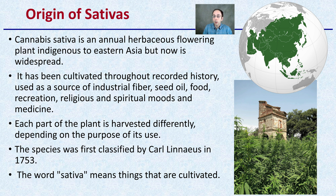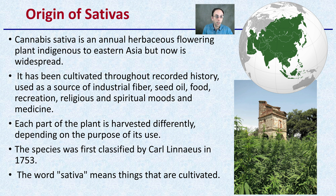Each part of the plant is harvested differently depending on the purpose of use, and it was first classified by Carl Linnaeus in 1753. The word sativa means things that are cultivated, which applies to many other plants — indicas and other flowering plants in general — but sativa is thought to be one of the more original ones.